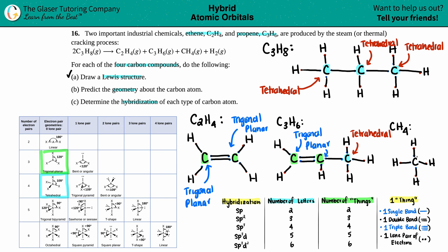The final compound, CH₄, has a single carbon with four atoms bound to it, so it also gets a blue and is tetrahedral. That completes part B.